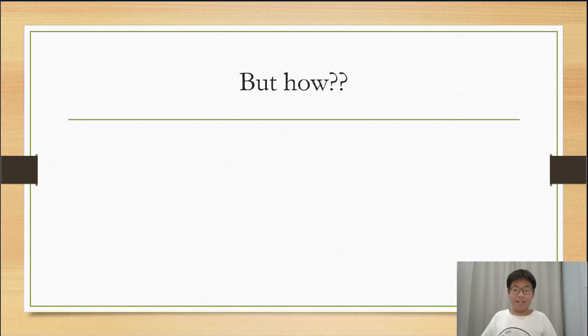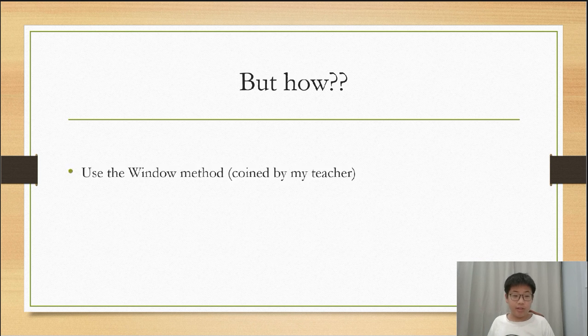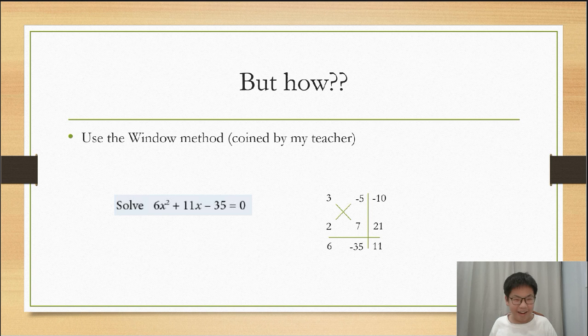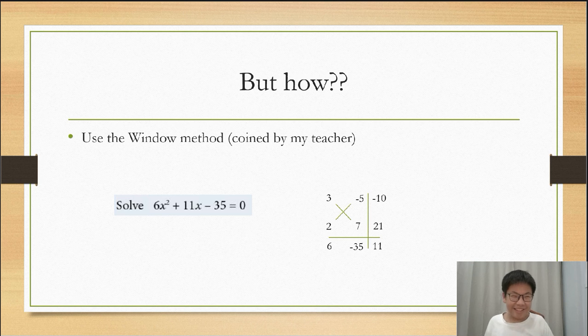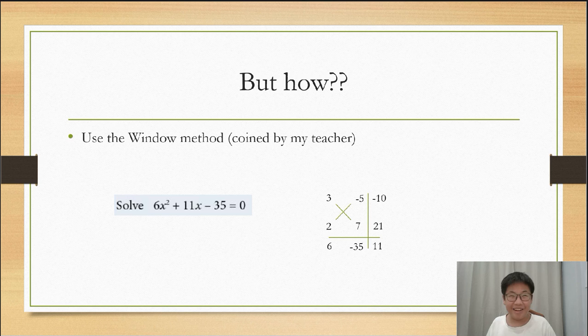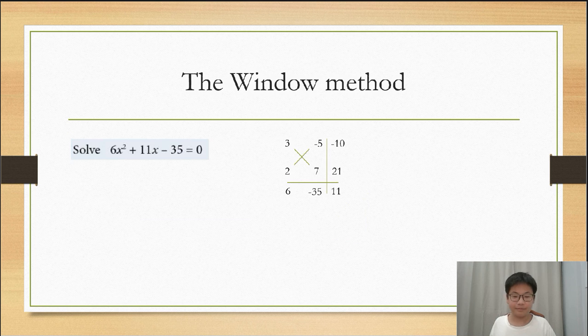But how? Sometimes factorizing a quadratic is not so easy. The solution is to use the window method, coined by my teacher. Using the last example, you can see this quadratic, and on the right is the window diagram for it. Please make jokes about this mathematician with a surname called Window. Look at the window diagram again. Notice anything?